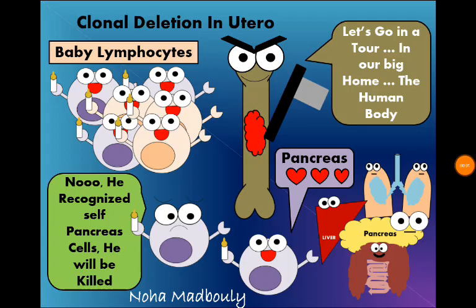Hello everyone. In this video we will illustrate why autoimmune diseases occur. Let's start with the story of clonal deletion that occurs in utero. Once upon a time, the bone marrow synthesized T lymphocytes and B lymphocytes — baby lymphocytes — and then took them on a journey through all the body.